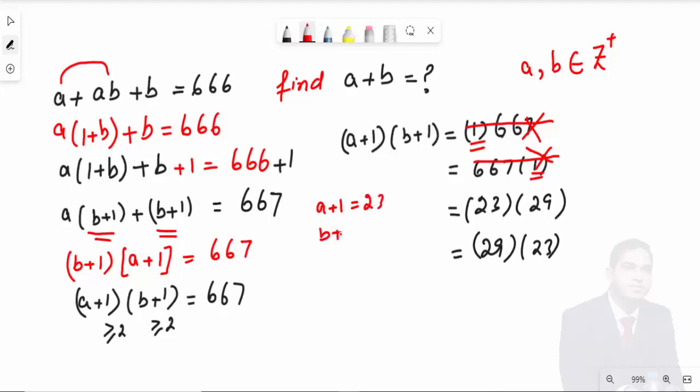...b + 1 = 29, so this is the first case. And the second is a + 1 = 29 and b + 1 = 23. So these are two possibilities from our factors.